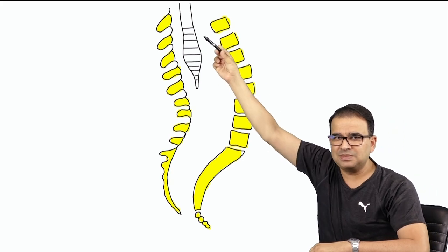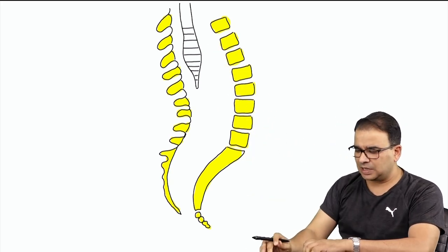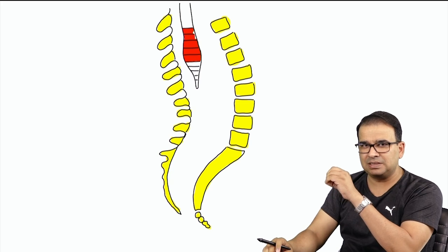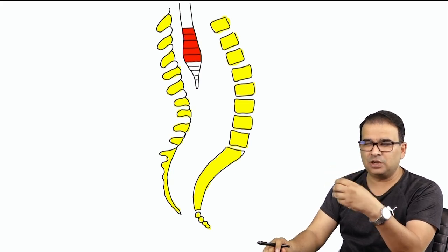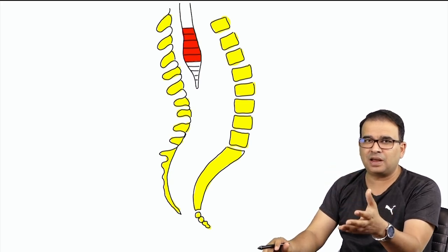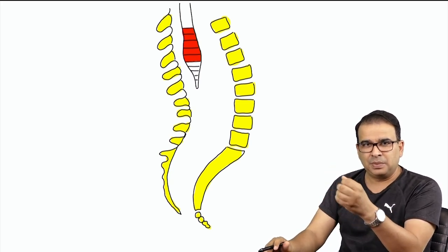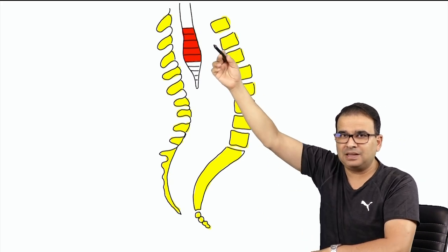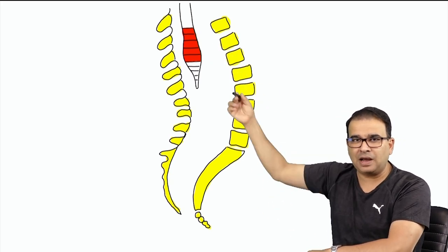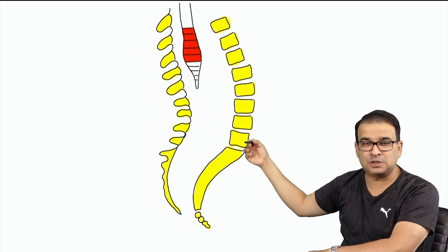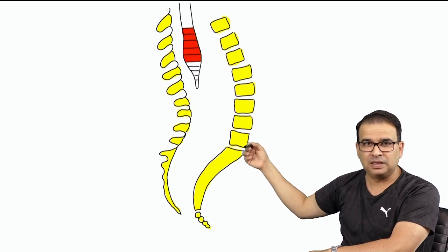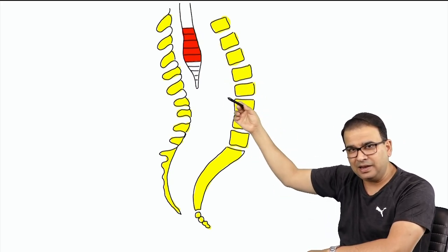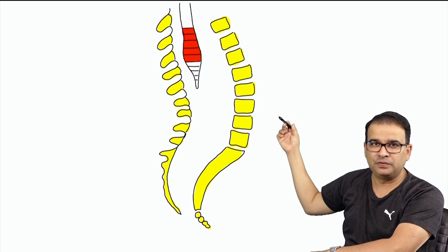I have marked some segments in that region. The segments highlighted in red are the lumbar segments. The nerves coming out from here are the lumbar nerves, but the lumbar intervertebral foramina are present below the level of the spinal cord. Therefore, the spinal nerve has to come down and then emerge out from those intervertebral foramina.